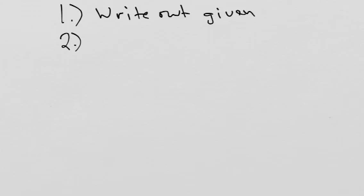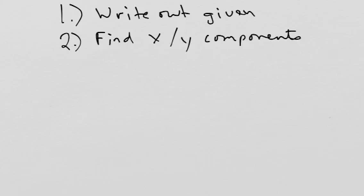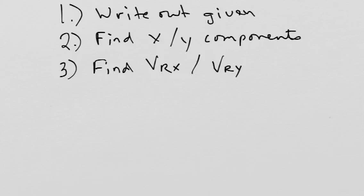Number two, you find your X and Y components using trig methods. You remember your units and your positive and negative signs because those are hugely important. Then you're going to find your resultant X and your resultant Y values.